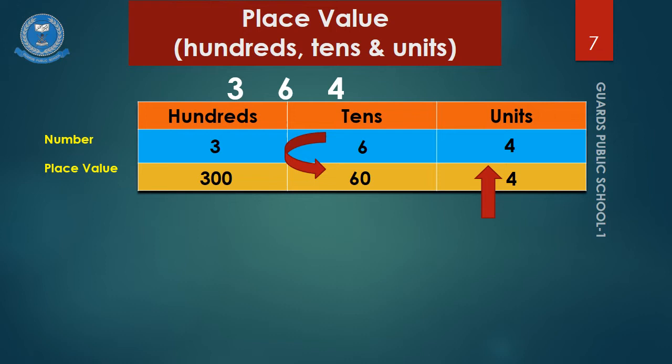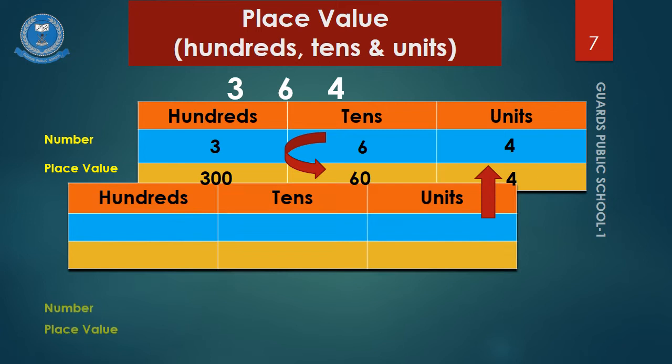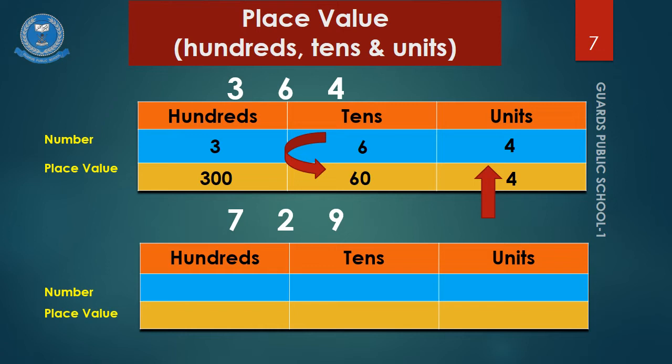Now, let's try to solve one more example of numbers seven hundred and twenty-nine. Let us place each number in its respected column. So, number seven in the hundredths column, and number two, yes, in the tenths column, and number nine, very good, in the units column. The place value of number seven is, yes, seven hundred, because it is at hundredths place. Now, the place value of number two is twenty, as there are two tenths. Now, the place value of number nine is nine, because it is at units place.